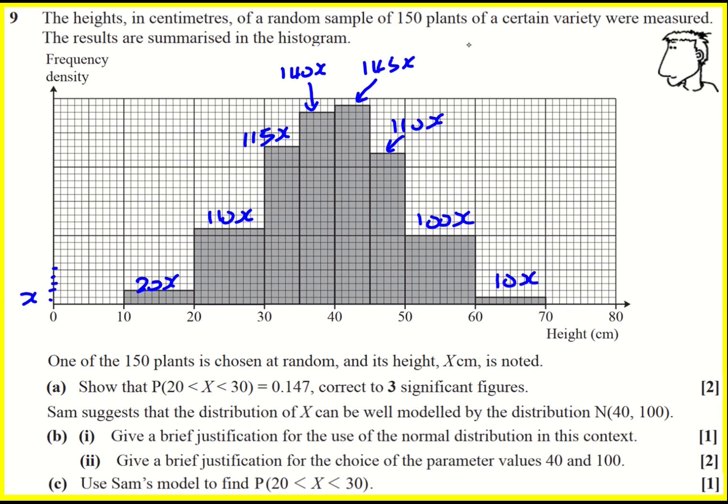I can add all of these up, which gives 750x. And that means that 750x is equal to 150. And x is 150 over 750 which turns out to be one-fifth or 0.2.